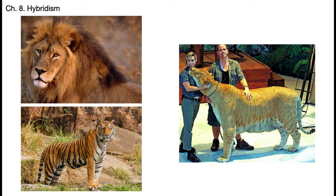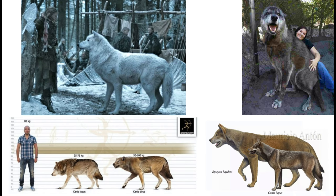Darwin also talks about hybrids. When you put together a male lion and a female tiger you get a liger — pretty much the speaker's favorite animal. Lots of hybrids display what's called hybrid vigor: they tend to be bigger or stronger than what you'd expect from ordinary purebred within-species offspring. The biggest of the big cats are these hybrids.